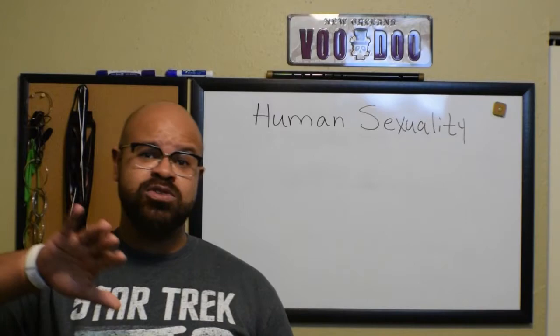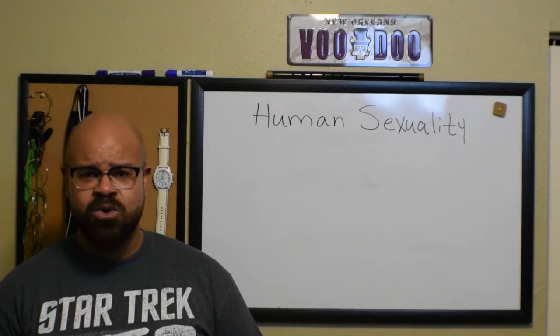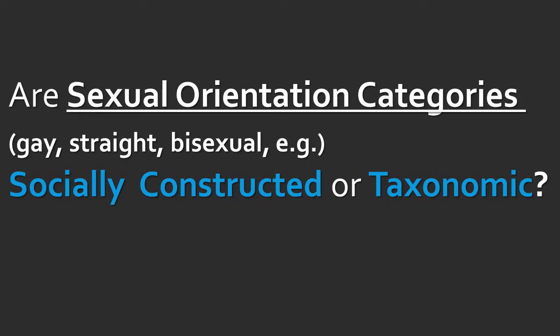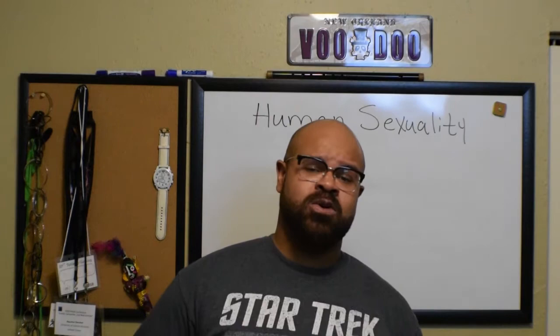The difference between a taxonomy — things that are truly distinct and have real boundaries between each other — and a social construct is where we're going to pick up this conversation about sexual orientation. Here's our question: is sexual orientation a taxonomy, or is sexual orientation a social construct? That is to say, do these boundaries truly exist, or do they exist because it's convenient for us to have such boundaries? But first, let's figure out what we're talking about — what is sexual orientation?